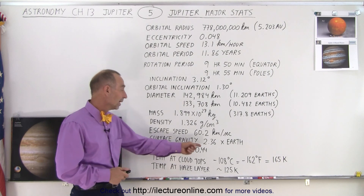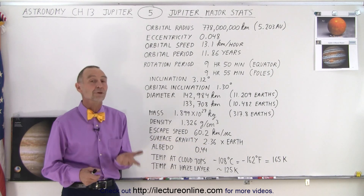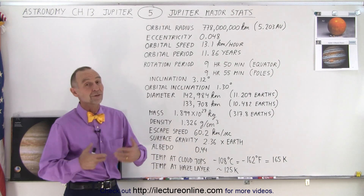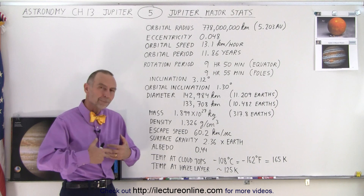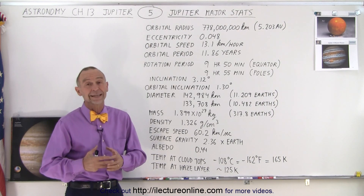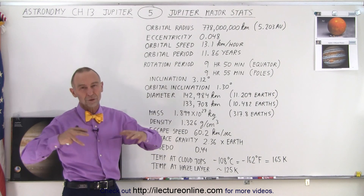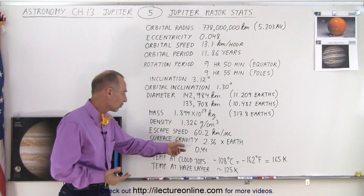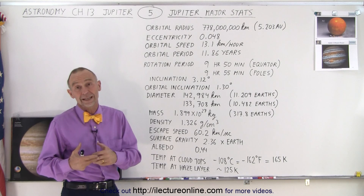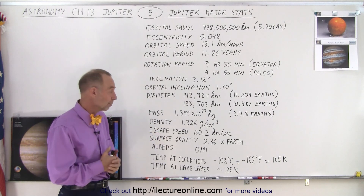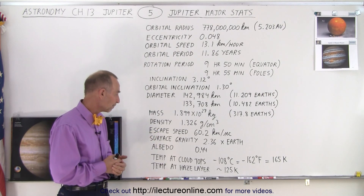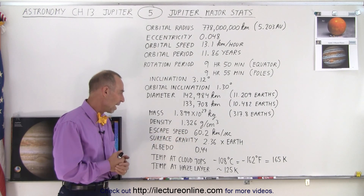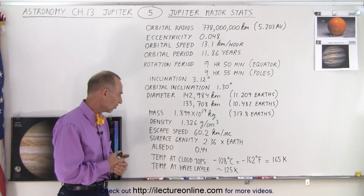The surface gravity is a little bit more than twice the gravity on Earth — if you weigh 100 pounds on Earth, you would weigh 236 pounds on the surface of Jupiter. The reason it's not much more than that is because it's not as dense a planet, so the radius is much bigger, and therefore the surface gravity isn't quite what it would be if it were a solid planet made of metal and rock. Nevertheless, the size of the planet does require a very large escape speed to get away.